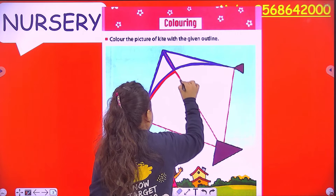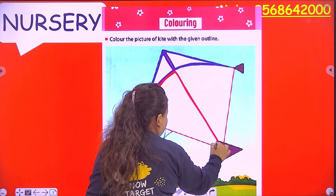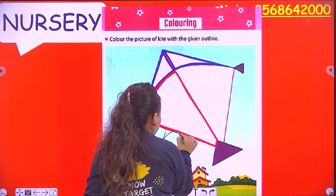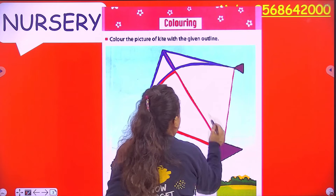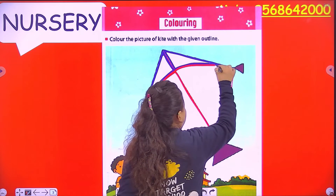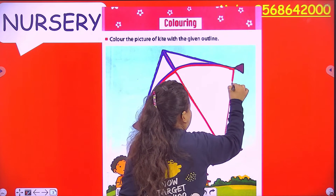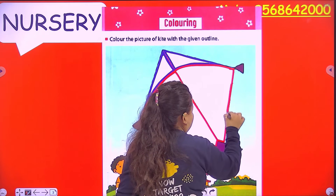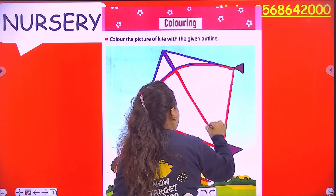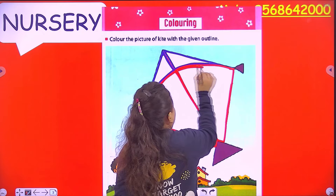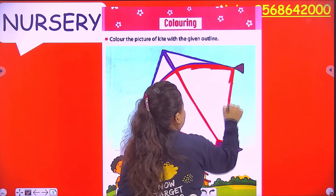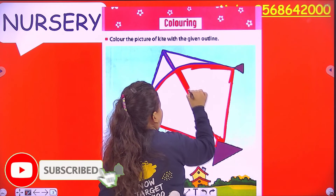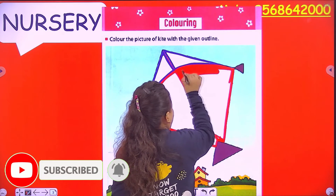So like this, color the outline. Now the second step: color the outline, color the outline.